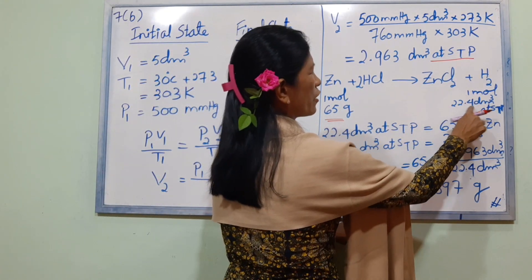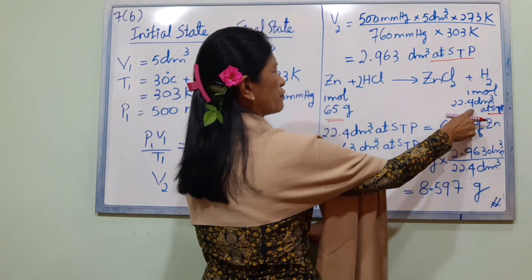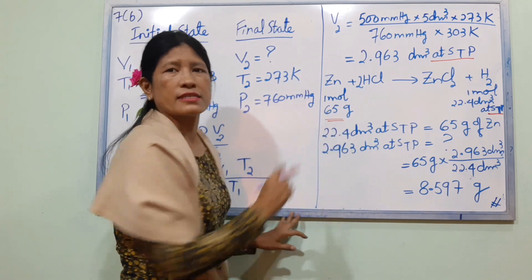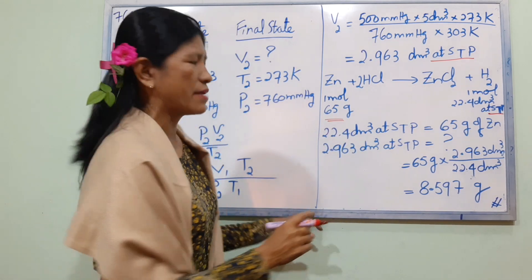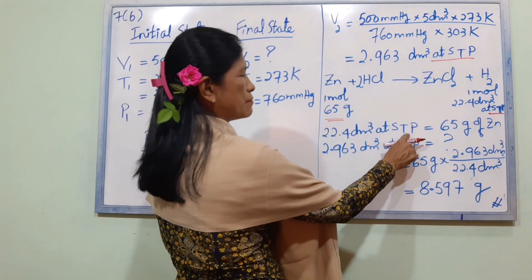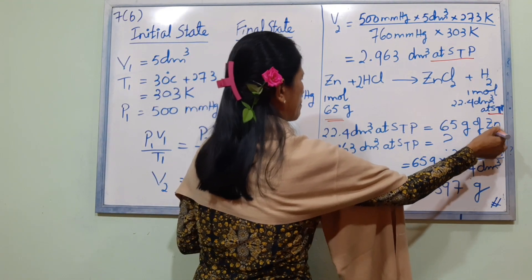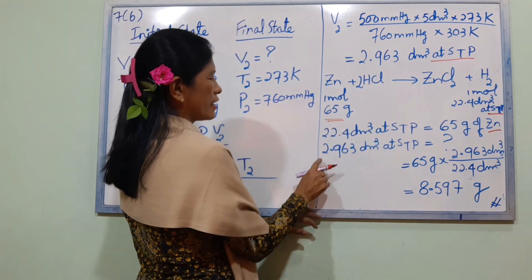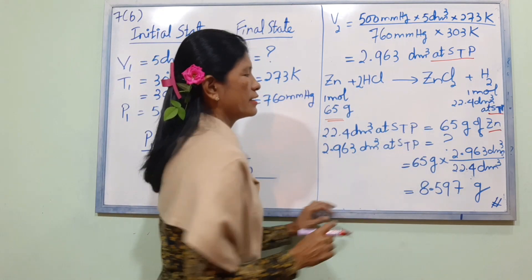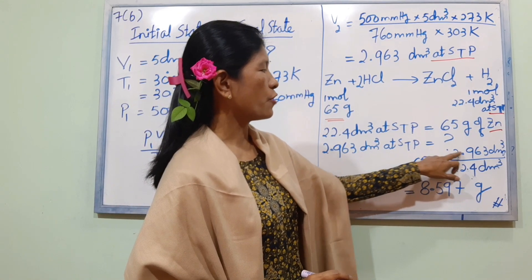We can use the molar volume of 22.4 dm³ at STP for further calculations.